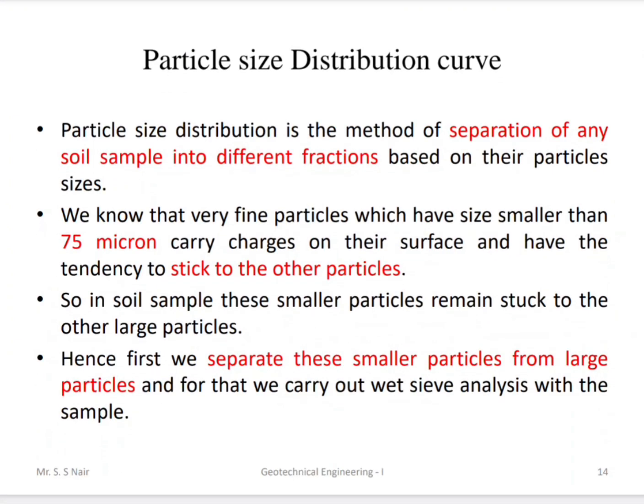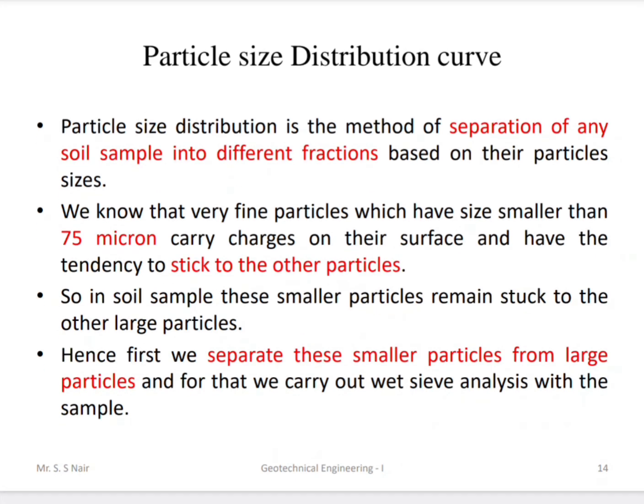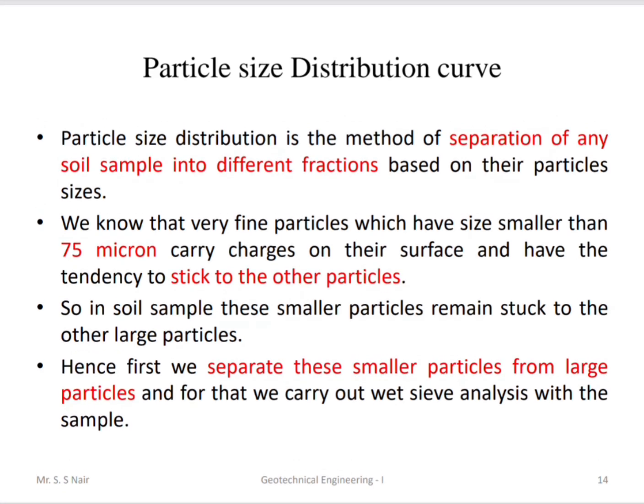The particle size distribution is a method of separating any soil sample into different fractions based on particle size. Very fine particles smaller than 75 microns carry electric charges on their surface, which makes them sticky to other particles. Because of this, in a soil sample the smaller particles remain stuck to the larger ones, so we first separate the fine particles from the coarser ones by carrying out wet sieve analysis.